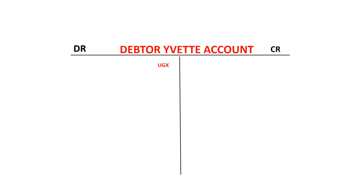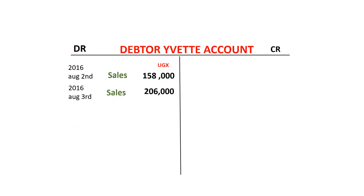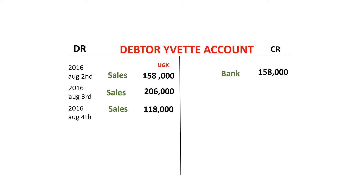Let's look at this graphically on screen. I've drawn up an account — we've called it Debtor Yvette. On the debit side we have some transactions: in 2016, August 1st, 158,000 — that was a sale; August 3rd, 206,000 — also a sale; August 4th, 118,000 — also a sale. On the credit side we have 158,000, and the other item affected was bank, which happened on 23rd of August. We've drawn this random account and now, at the end of the period, we need to analyze and balance it off.